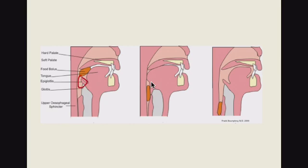Since the epiglottis plays an important role in ensuring the trachea is covered during swallowing and directing food to the esophagus, when the epiglottis is inflamed, the patient presents with dysphagia. Irritation of the inflamed epiglottis during swallowing manifests as dysphagia.